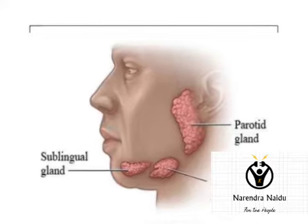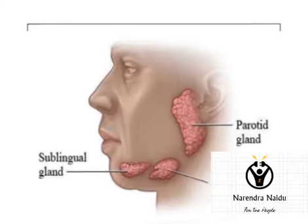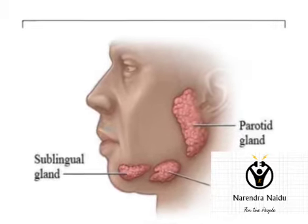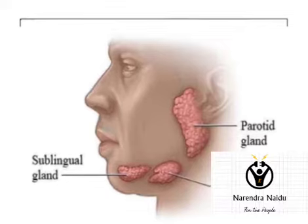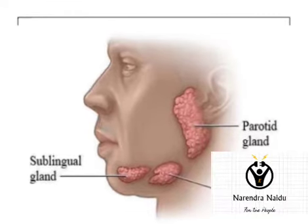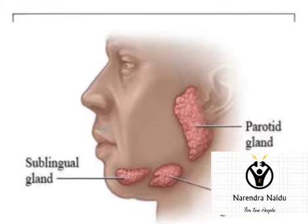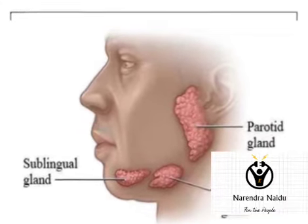Salivary glands. There are three pairs of salivary glands. They are called the parotid gland, submandibular glands, and sublingual glands.